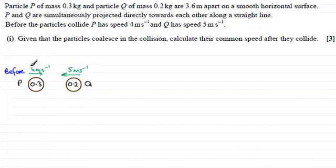I've got the speeds before impact of 4 meters and 5 meters per second and they are moving towards one another. Now we're told that when they hit one another they coalesce, which in other words is they essentially join together and form a combined mass. That combined mass is going to be 0.3 plus 0.2 which is going to be 0.5 kilograms. And we've got to find out what that common speed is after they collide.